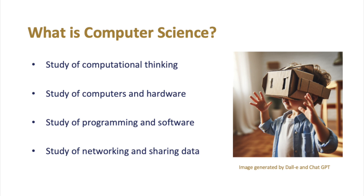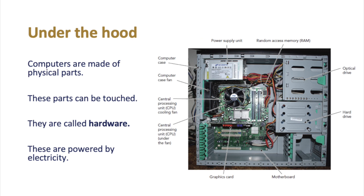Before we start looking at the actual syllabus, you need some basic knowledge of what's under the hood of a typical computer. Computers are made of physical parts that can be touched — they are called hardware — and these are powered by electricity. If you don't have electric current running to them, they just become inanimate objects. On screen you see a diagram of a basic computer. There are many parts in there: the CPU, optical drive, power supply, graphics cards, RAM, and so on. We're going to have a brief look at each part individually.